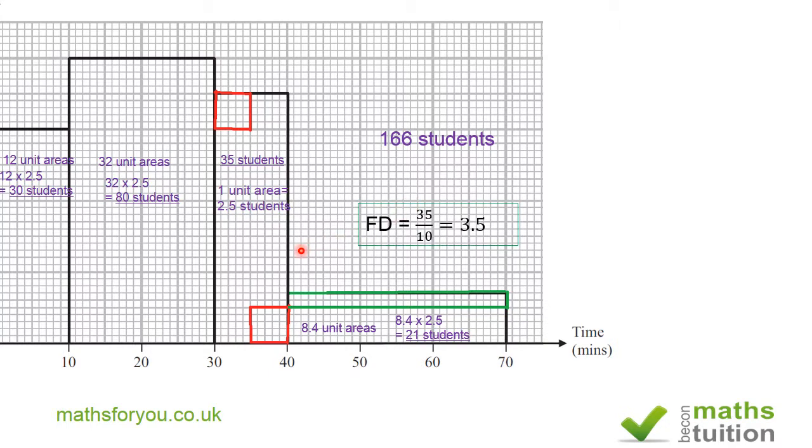So for this section here the frequency density is 3.5 and if we divide it into seven sections, each section is 0.5. So that will help us to find the frequency density for all four intervals now.